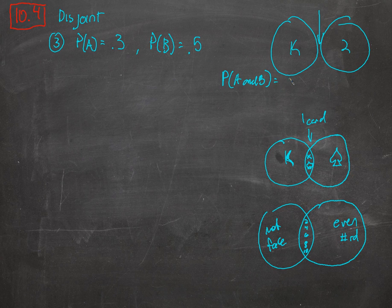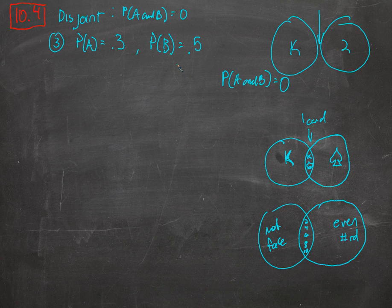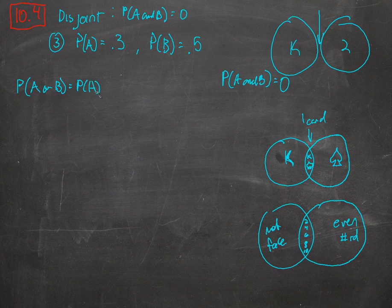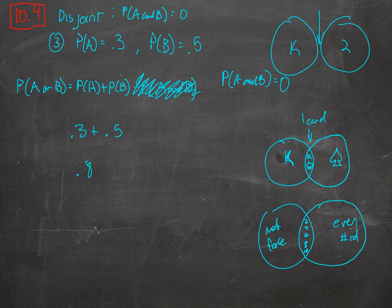If it's disjoint, the probability of A and B is zero — there is no possible way that with two disjoint events you'll have one thing be two at once. So the probability of A and B is zero; that's what disjoint means, it's impossible. There's a formula: the probability of A or B equals the probability of A plus the probability of B minus the probability of A and B. In the disjoint case it's zero, so P(A or B) is just P(A) plus P(B) — so 0.3 plus 0.5 equals 0.8.